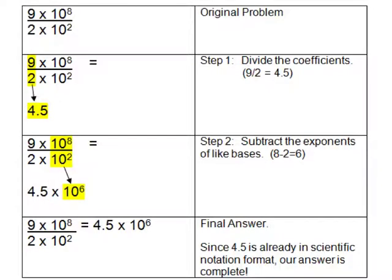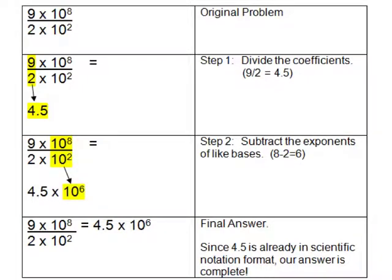Another example: 9 times 10 to the 8th divided by 2 times 10 to the 2nd. 9 divided by 2 is 4.5, and 10 to the 8th divided by 10 to the 2nd — when this 2 comes up, it's going to become negative 2, and 8 minus 2 is 10 to the 6th. And 4.5 is already in scientific notation, so we're finished.